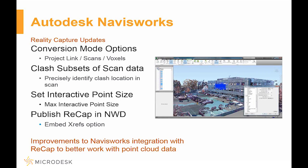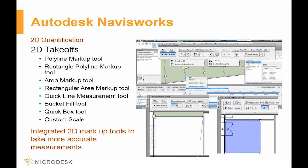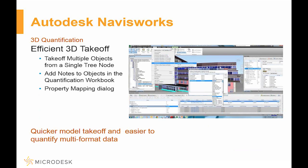Hopping over to Navisworks — more ReCap integration here. You can do clash subsets and look at where things are happening. You can convert the point cloud a couple of different ways, set the point size so you don't have more data than you need, and once it's in, you can still combine it so your Navisworks file will still contain all that point cloud data. Stepping away from point clouds, the quantification enhancements are significant. Autodesk has now integrated a lot of 2D takeoffs inside of Navisworks, in addition to the 3D side. You can draw boxes and shapes using typical 2D scale takeoff tools and still combine that with all the 3D takeoffs — you're not limited to just one or the other.